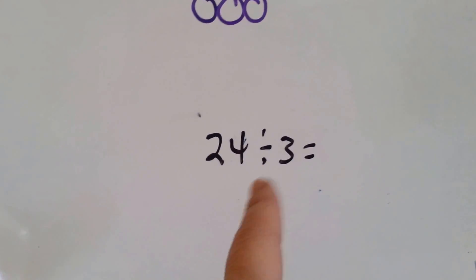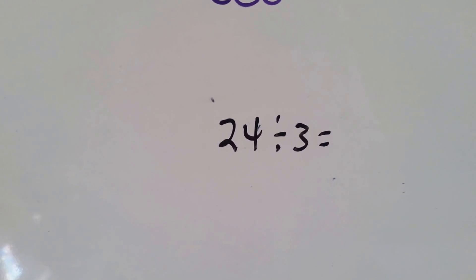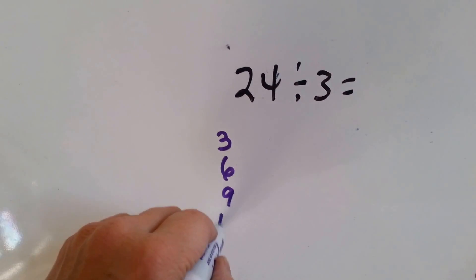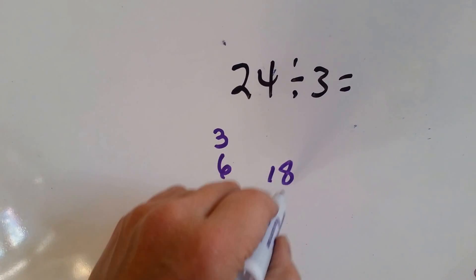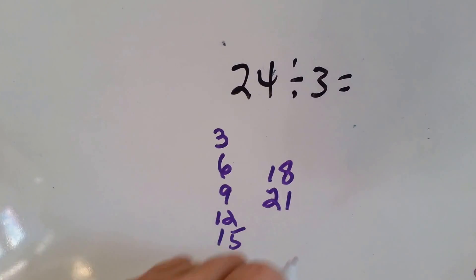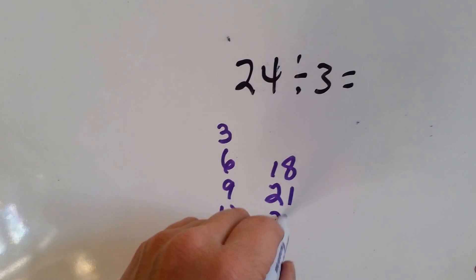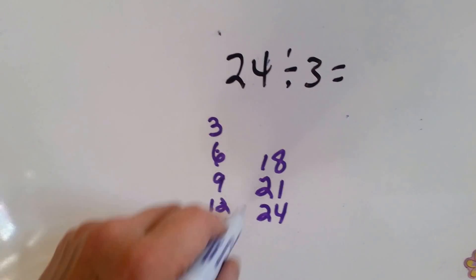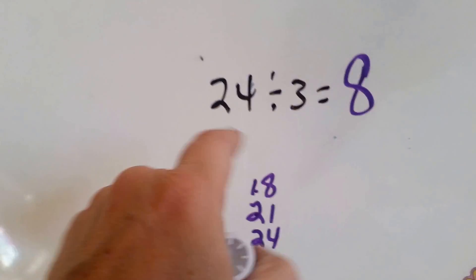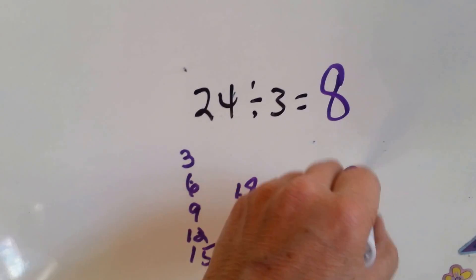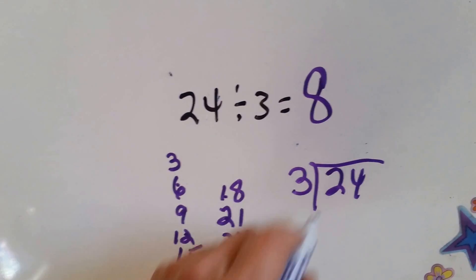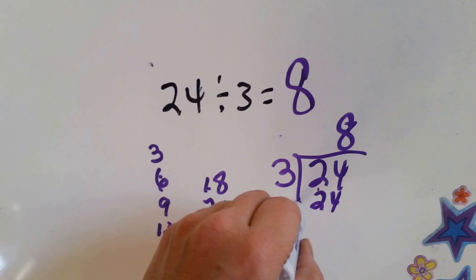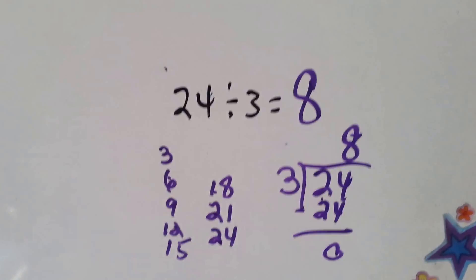What about 24 divided by 3? Let's count by 3's: 3, 6, 9, 12, 15, 18, 21, 24. How many times did we do it? 1, 2, 3, 4, 5, 6, 7, 8. 24 divided by 3 equals 8. We would say 3 times 8 is 24. Do our subtraction and get 0 — we did it correctly.